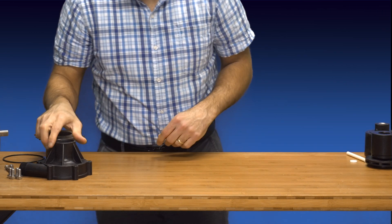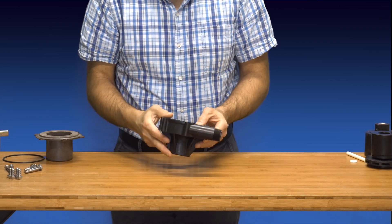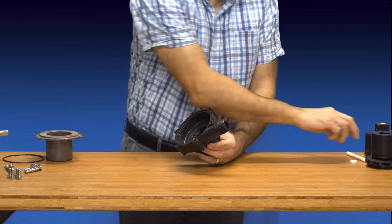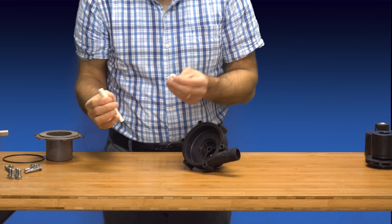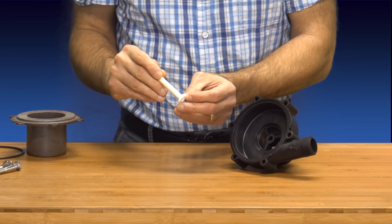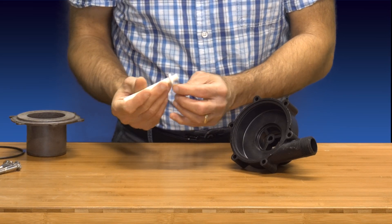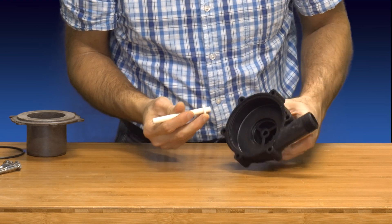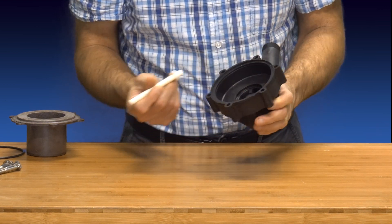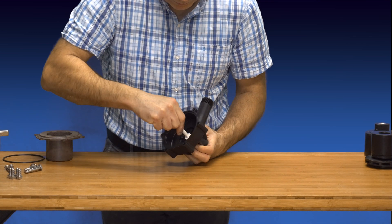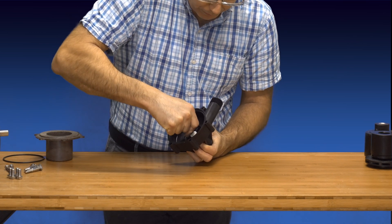We'll begin the assembly process by preparing the front housing. We'll take the pump shaft and thrust washer and slip the thrust washer over the end of the shaft, aligning their D-shapes. With these two parts loosely assembled to each other, we'll take the end of the pump shaft and insert it into the D-shaped hole in the front housing. Press it in firmly until it stops.